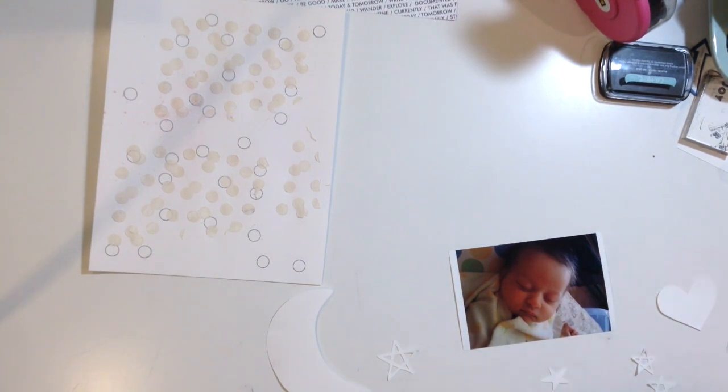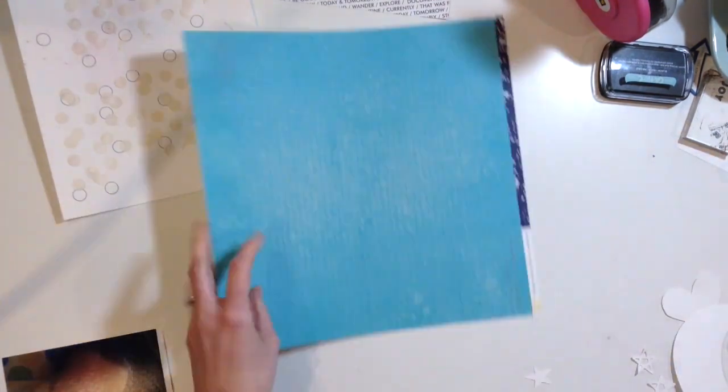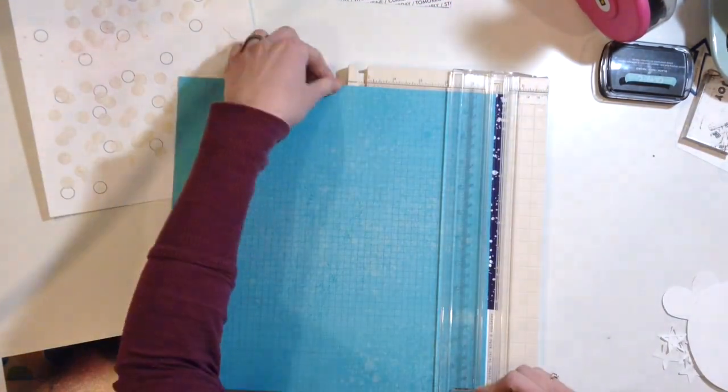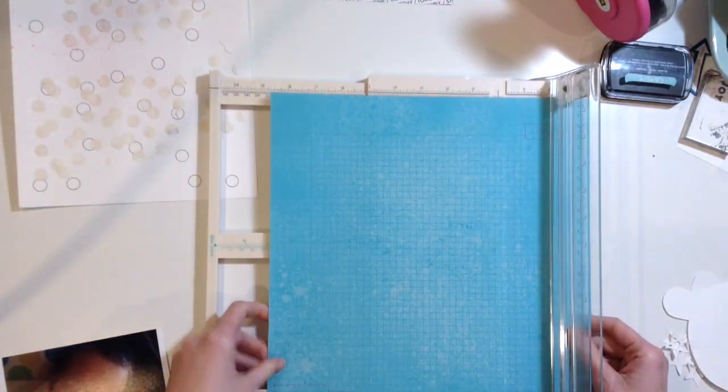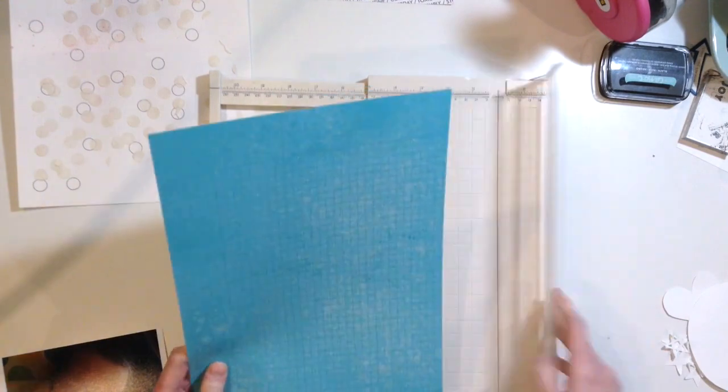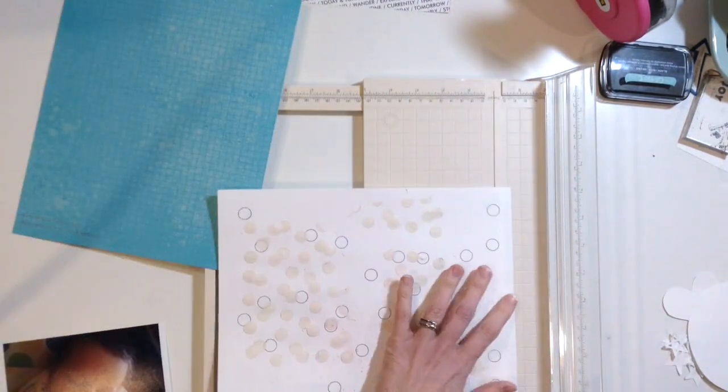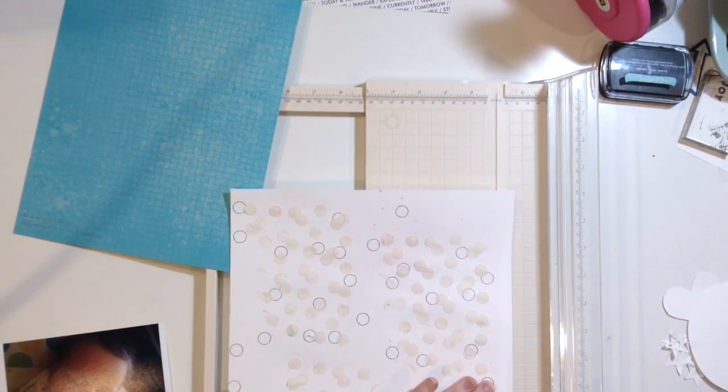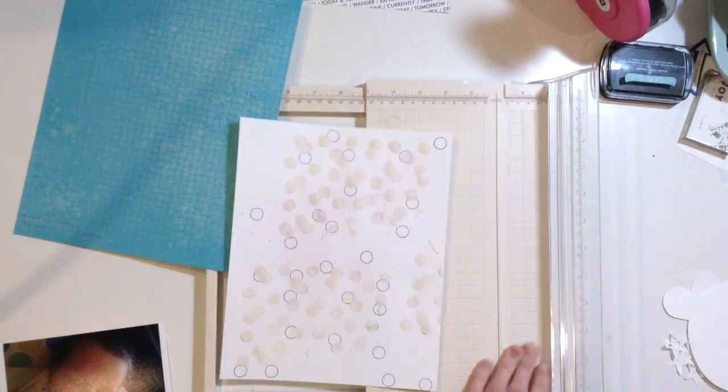So I also sprayed my paper with some shimmers, razzleberry, razzle, dazzleberry. It's like a dark pink, almost a purple color because I wanted some of that to be on my modeling paste, but I didn't want a really thick layer of it. So I'm going to cut this down because I decided that I want to have a border of some regular pattern paper.